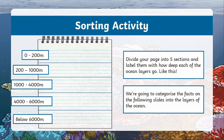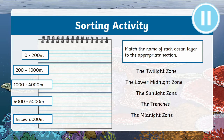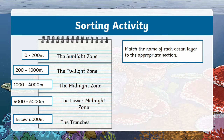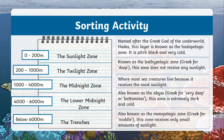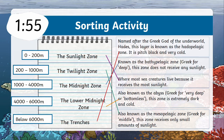Now it's time for a sorting activity. Divide your page into five sections and label them with how deep each of the ocean layers go. Our next task is to categorize the facts on the following slides into their correct layers of the ocean. First, match the name of each ocean layer to the appropriate section. Hit the pause button until you're ready to move on. Good job, here are the answers. If you got any of them wrong, make some corrections now before we move on. Now have a go at matching the description to each ocean layer. And here are the answers. If you're struggling to remember, you can rewind to this point in the video.